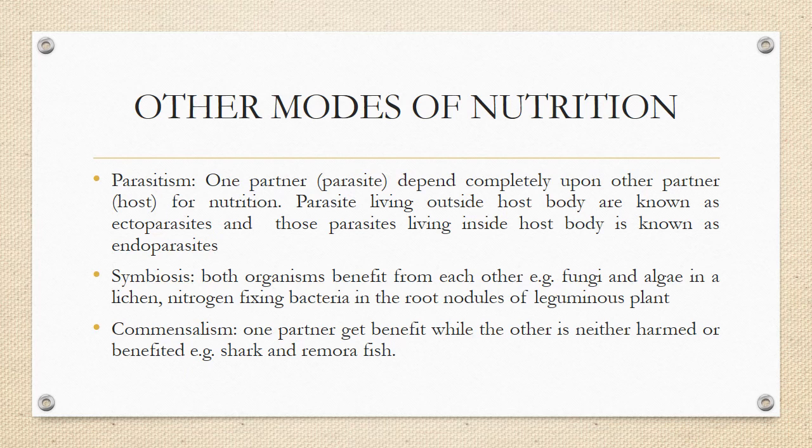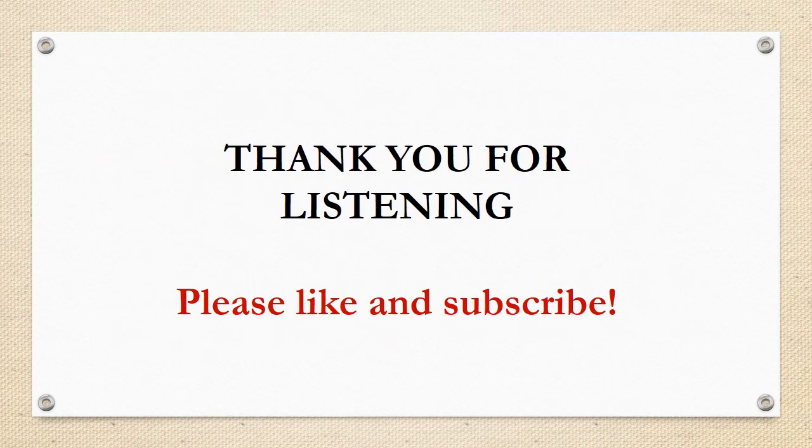The third mode is commensalism. In commensalism, one partner benefits while the other neither benefits nor is harmed. An example is the shark and the remora fish. Thank you very much for listening; I really appreciate it — don't forget to like and subscribe.